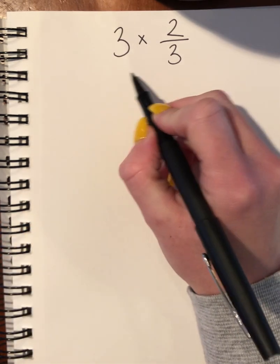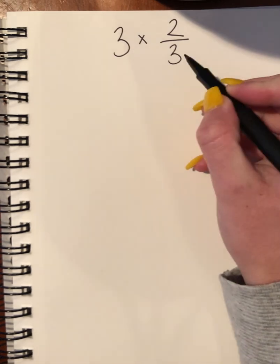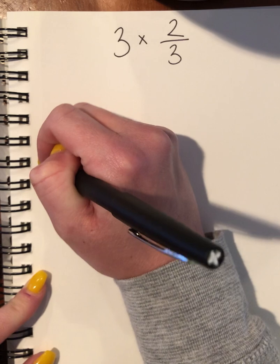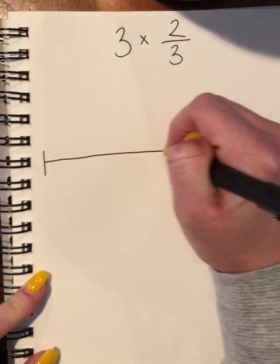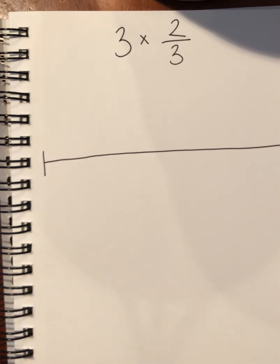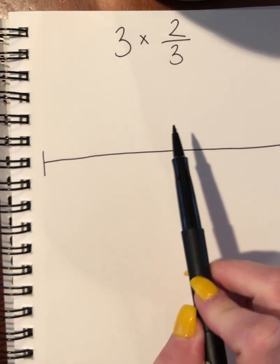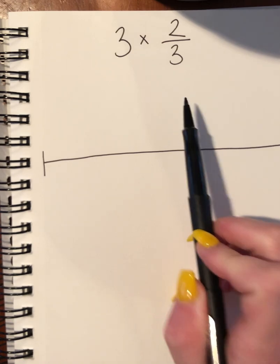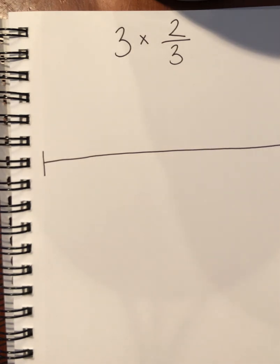I have 3, a whole number, multiplied by 2/3, a fraction. I'm going to make my number line. Here's the thing: if you're using number lines with fractions, you need to make sure you know your fractions well, like knowing how many would make a whole number. I'm going to show you that.